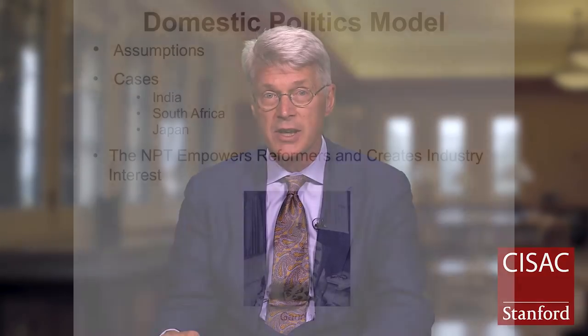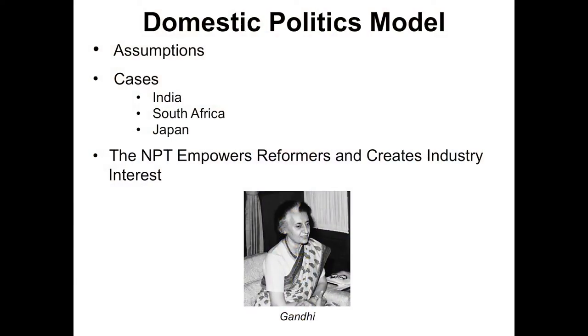So that's the first model — it looks at security mechanisms. The security arguments can take you a long way but can't explain all cases. There are other cases — India in 1974, and maybe even in 1998 when it tested again, the South Africans and the Japanese — in which domestic politics plays a predominant role.